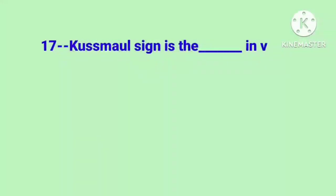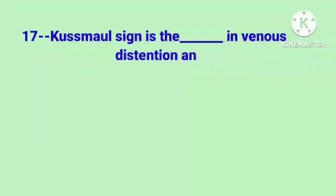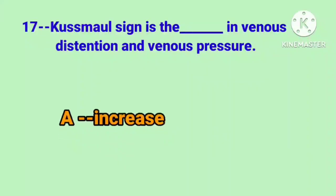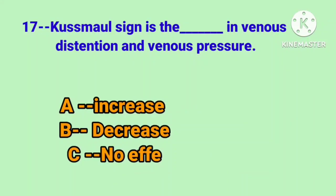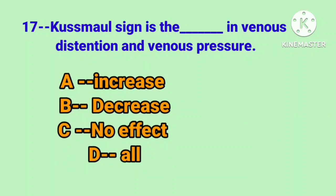Question number 17: Kussmaul's sign is the ___ in venous distention and venous pressure. Option A: increase, B: decrease, C: no effect, D: all. Correct answer is option A.